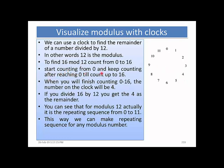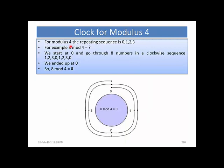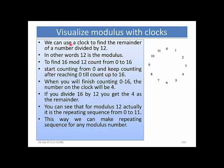Start counting from 0 and keep counting after reaching 0 until you count up to 16. When you finish counting, the number on the clock will be 4. If you divide 16 by 12 you get 4 as a remainder. For modulo 12 it is a repeating sequence from 0 to 11 — we keep repeating within these numbers only. For example, for modulo 4, the repeating sequence is 0, 1, 2, 3 — always starting from 0, so always 1 less than the modulo number (e.g., 12 minus 1 equals 11).